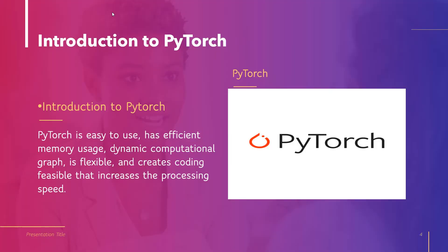Now let's discuss about PyTorch. PyTorch is an open-source machine learning library that is mostly used for computer vision and natural language processing in Python. It is developed by the Facebook AI Research Lab. It is a software released under the modified BSD license, built based on Python, which supports the calculation of tensors on GPU. PyTorch is easy to use, has efficient memory usage, dynamic computational graph, is flexible, and creates coding feasibility that increases the processing speed.